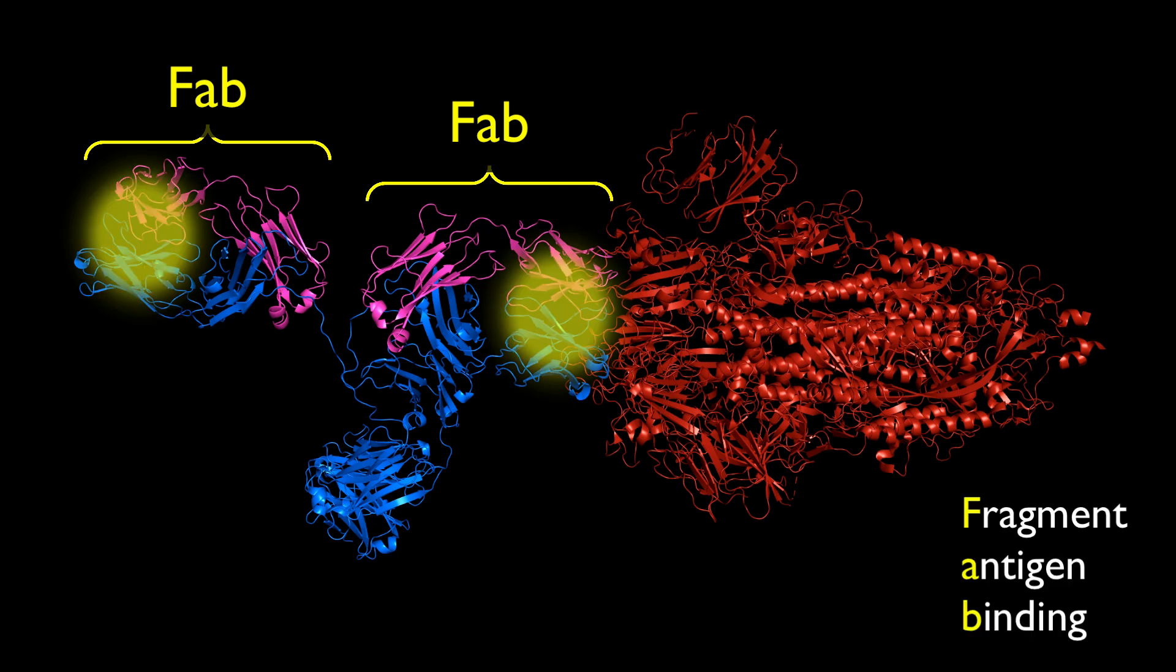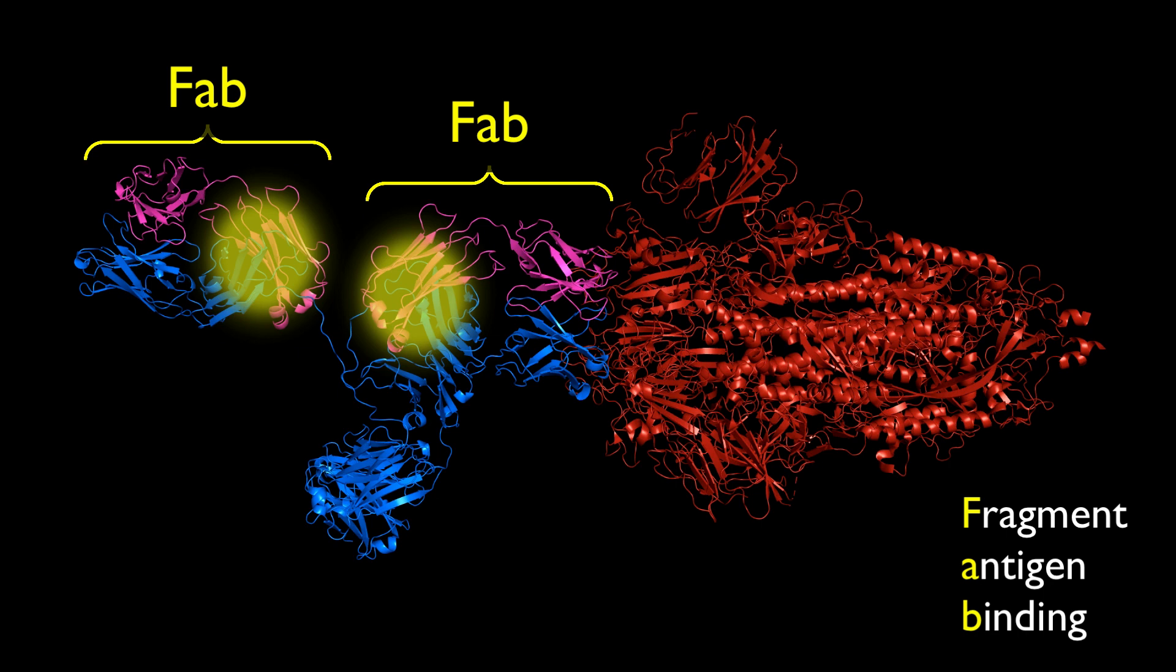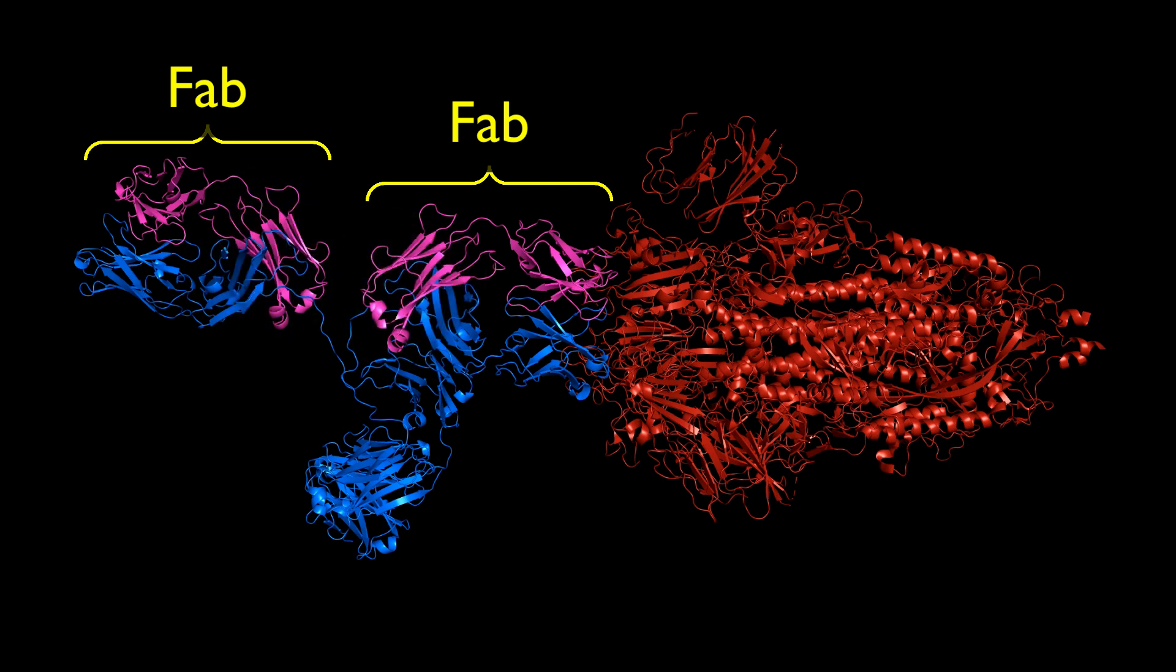The FAB consists of the variable domains from both the heavy and light chain plus a constant domain from each, all conveniently held together by the disulfide bonds that make up the immunoglobulin fold. After the protein is cleaved, the FC domain can be separated from the FAB domains, and the FABs alone are used in the binding experiment.